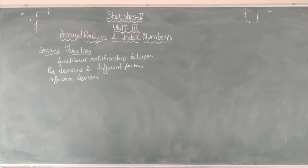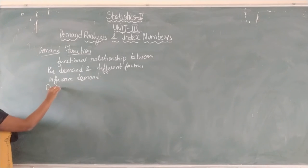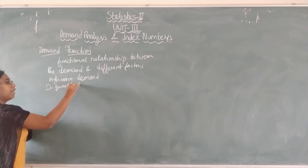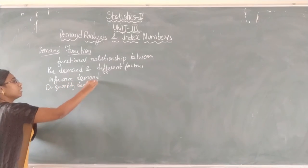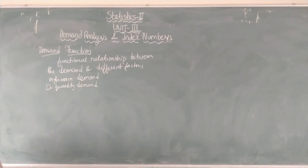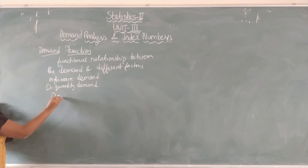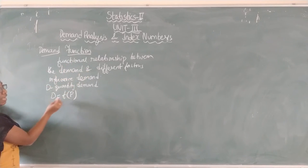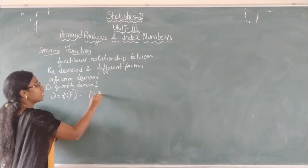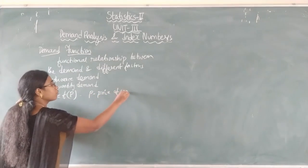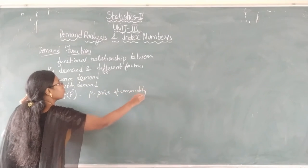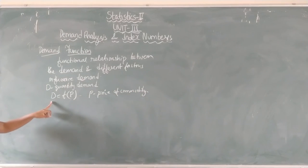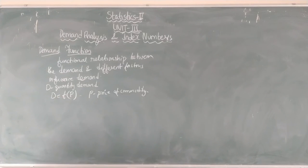So basically, suppose D is the quantity demanded. Then the functional relationship is given as D equals F of P, where P indicates the price of the commodity. So demand is a function of price.